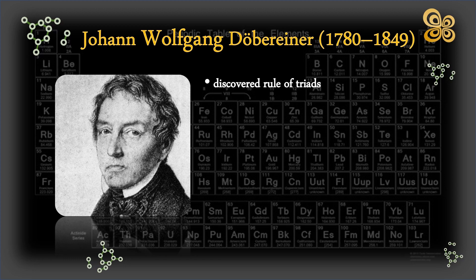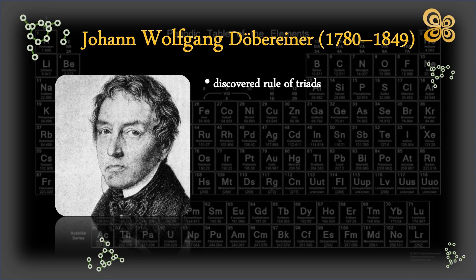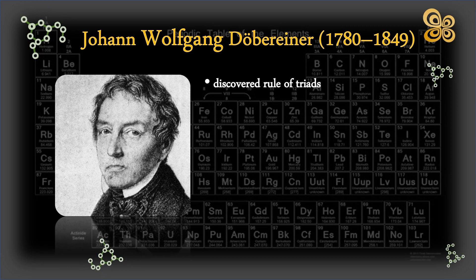Triads are groups of three elements that Döbereiner labeled after noticing that they frequently share characteristics. For instance, he discovered that the atomic weight of strontium was similar to the average of the atomic weights of calcium and barium. Similarly, the characteristics of chlorine and iodine were similar, and their atomic weights were close to the average of bromine and fluorine. The development of Döbereiner's law of triads was a crucial milestone in the creation of the periodic table.